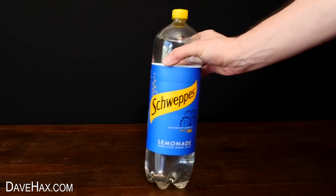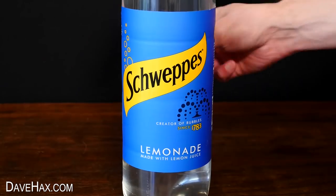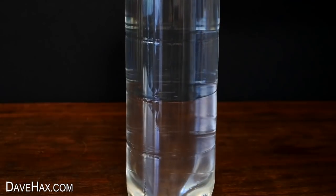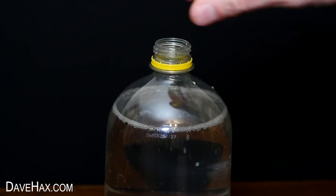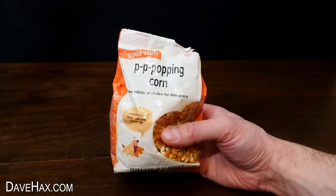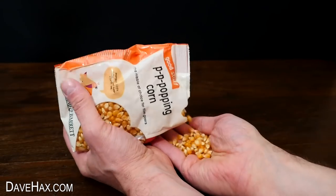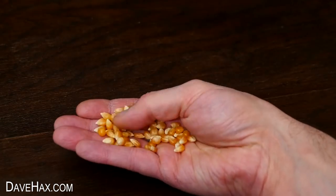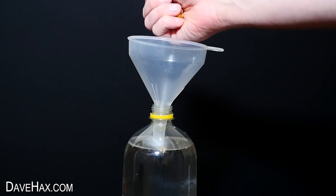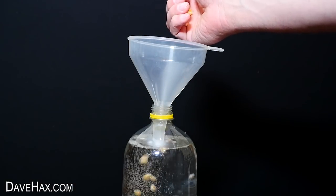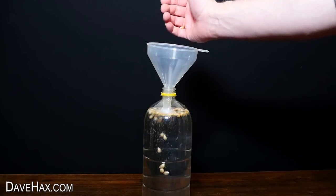For the next one you'll need a bottle of lemonade and remove the label. Take the cap off and place in a funnel. Next you'll need a handful of popcorn kernels. And drop them down into the lemonade bottle. You can see they fall down and rise back to the surface.